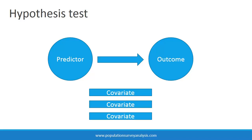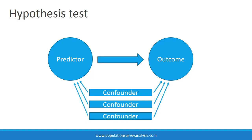Confounders will be discussed further in a multivariable regression video. In short, confounders are factors that are associated with both the predictor and the outcome, which make the two variables appear to be statistically correlated even when they are not. If we do not control for confounders by including them in the model, then we might incorrectly estimate the magnitude, direction, and statistical significance of the relationship between the two variables of interest, and ultimately arrive at a wrong answer to our research question.